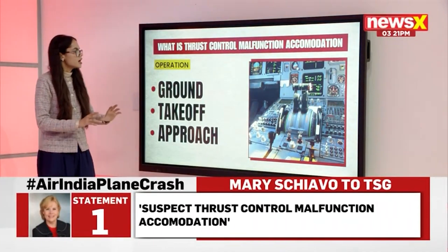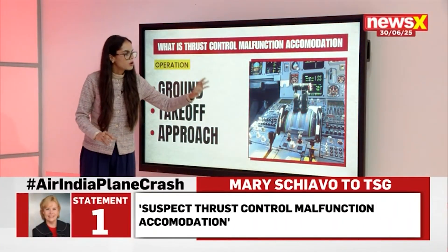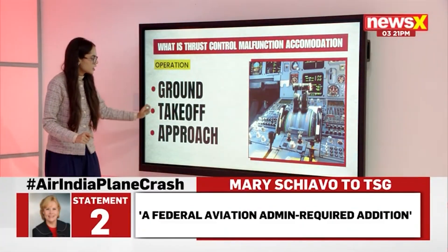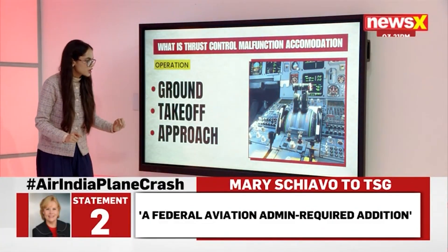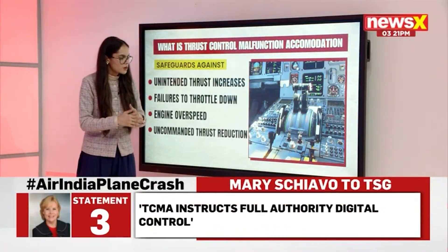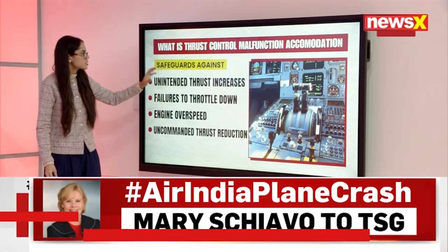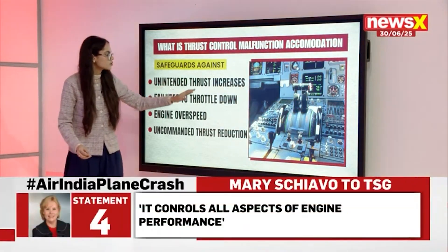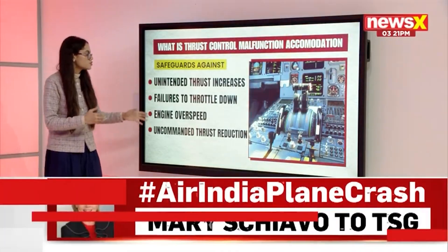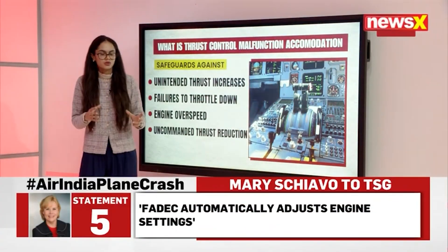What operations does this particular thrust control malfunction accommodation system look at? It looks at ground, takeoff, and approach. It checks whether the aircraft is stationary or not. It safeguards against unintended thrust increases, failures to throttle down, engine overspeed, and uncommanded thrust reduction as well.